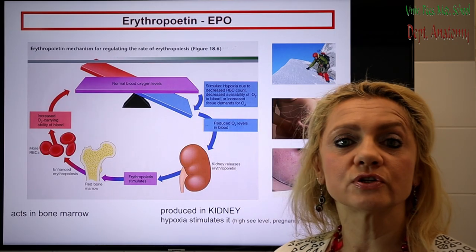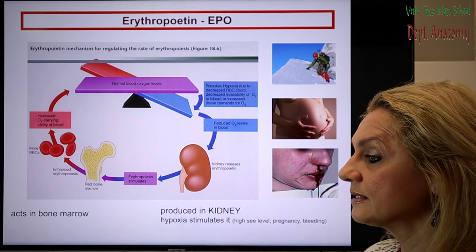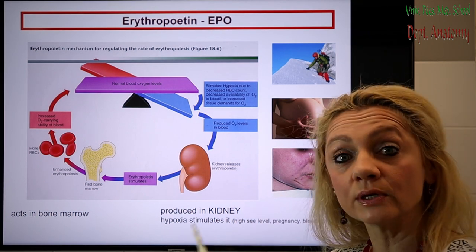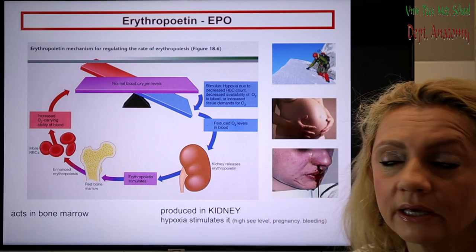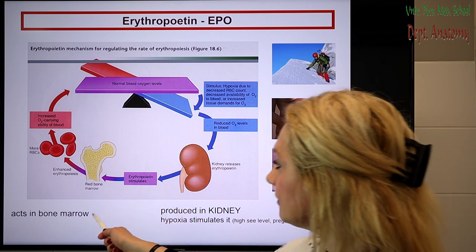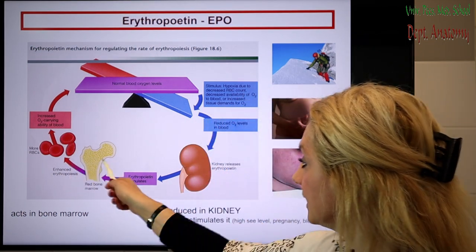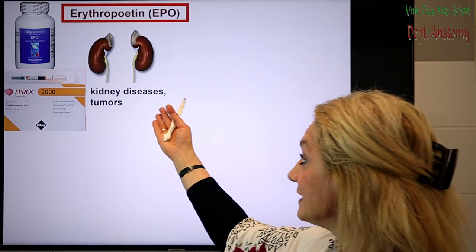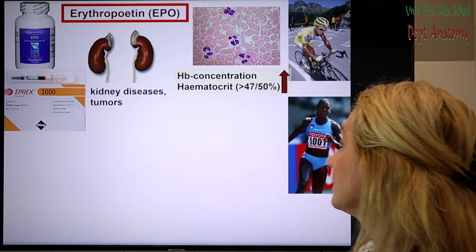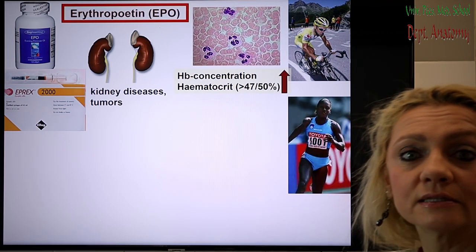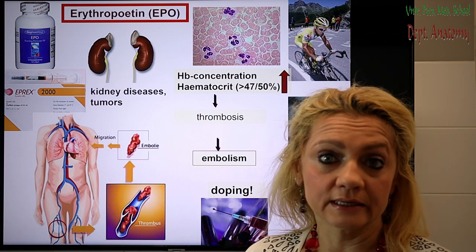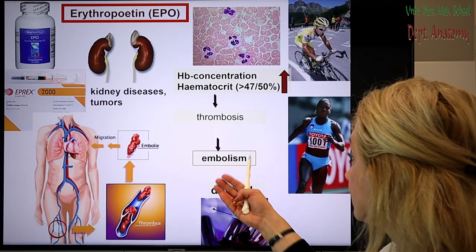Erythropoietin is something everybody has heard about — it's also used as a doping substance. It is produced in the kidney, which is important: in kidney diseases there can be anemia because there is no erythropoietin produced. Hypoxia stimulates it, and it reaches the bone marrow through the blood and acts there. In kidney diseases and tumours it can be used as a medicament to stimulate bone marrow blood production. Unfortunately it's also used as a doping material, which is illegal, and the danger is that it can increase the blood count so much that it can cause thrombosis.